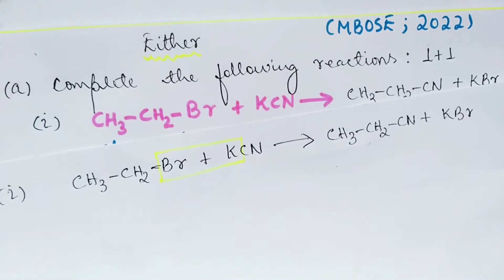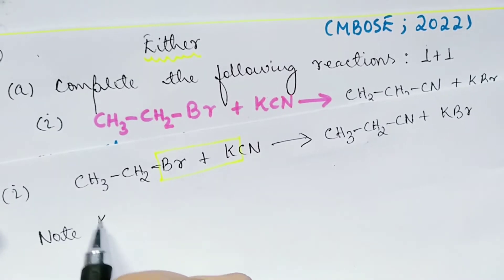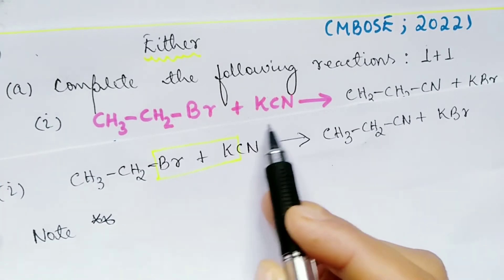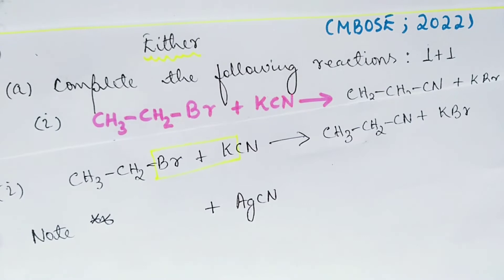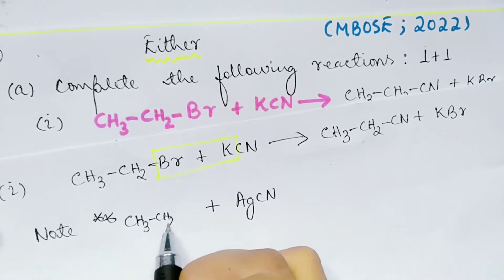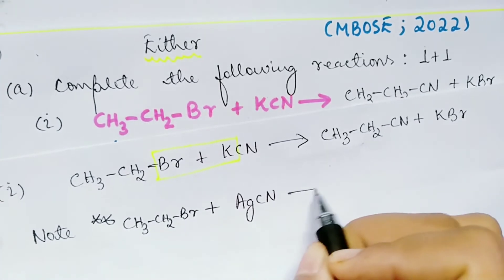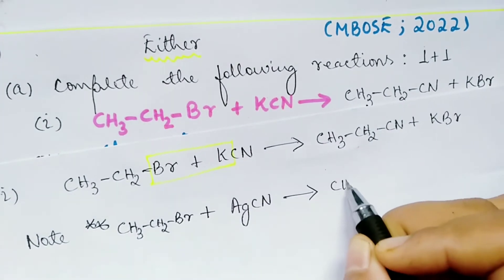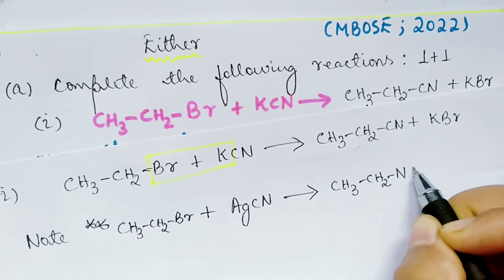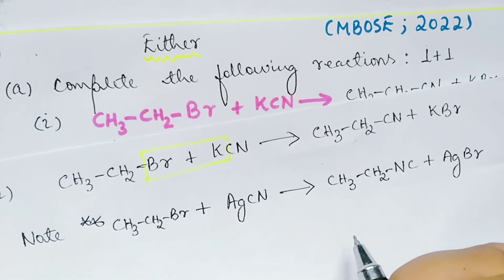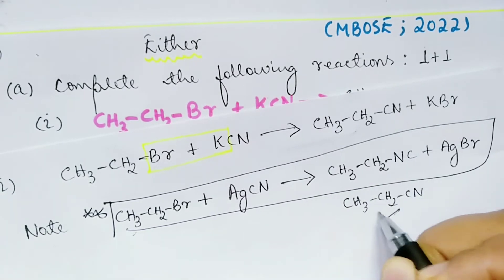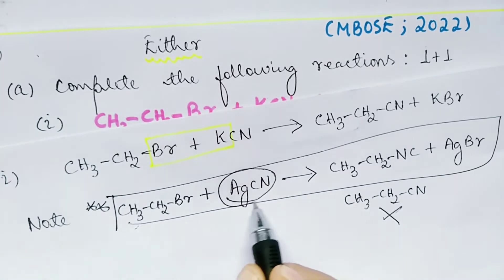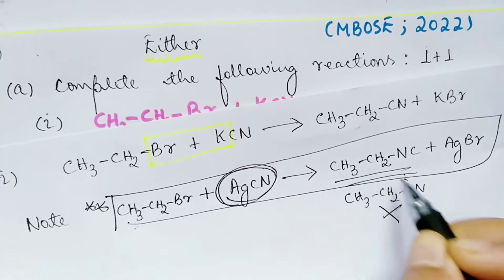This is very important — do not ignore this. If instead of potassium cyanide or sodium cyanide, they give you silver cyanide with an alkyl halide such as ethyl bromide, then you will get an isocyanide — ethyl isocyanide — and silver bromide. If you write ethyl cyanide in this case, your answer is wrong. Remember: silver cyanide gives an isocyanide.